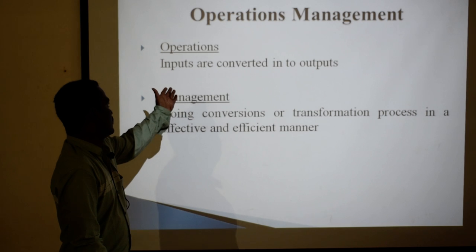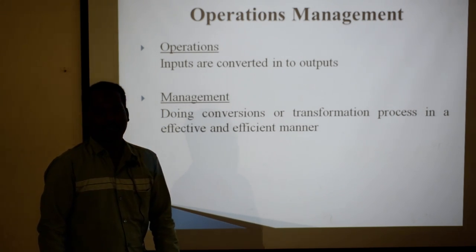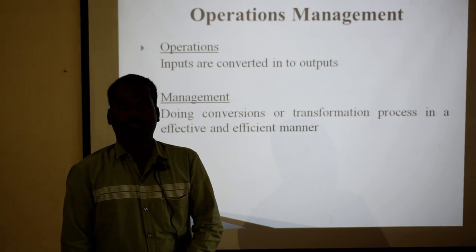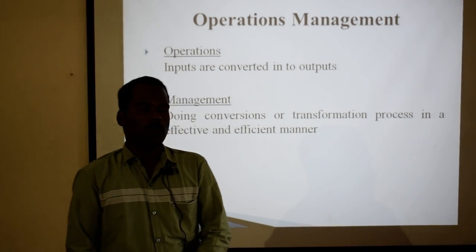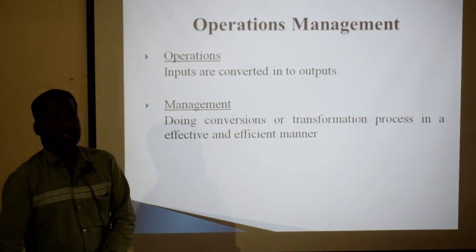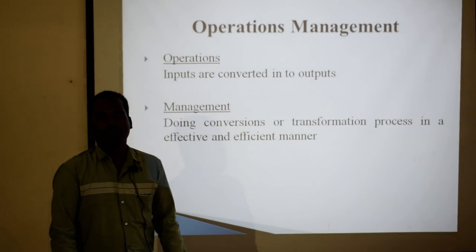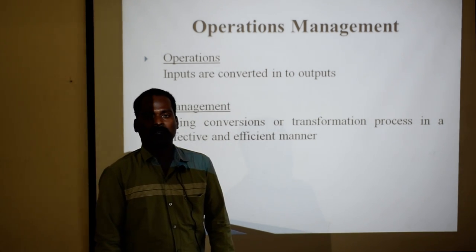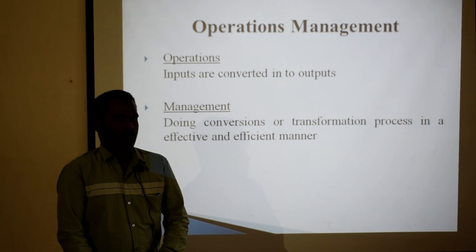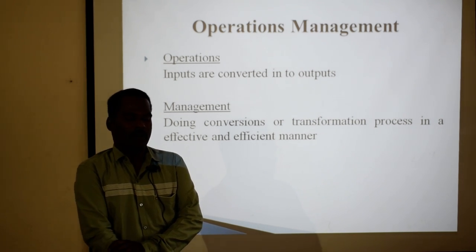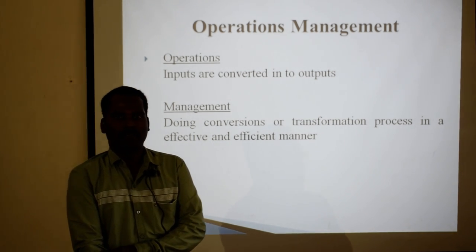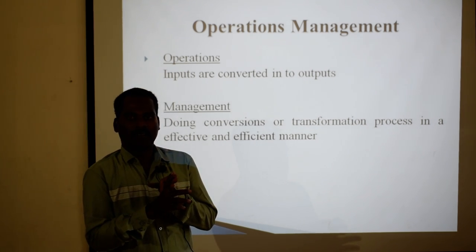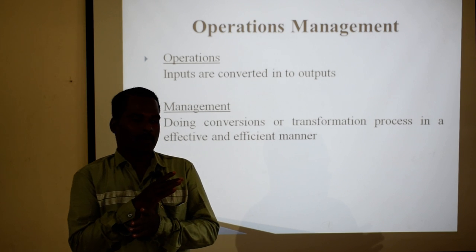Operations — inputs are converted into outputs. A raw material which is going to be converted into the output is called the operation. For example, we decide to produce cement. We have a cement factory. We need the plant, the equipment, the machineries, labor force, and of course the raw materials.